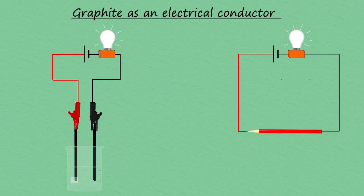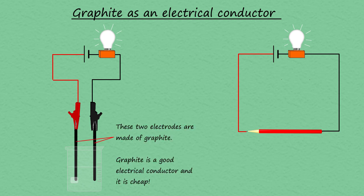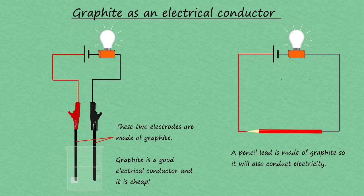The two diagrams on screen show two examples of graphite conducting electricity. Electrodes used to pass an electrical current through solutions are made of graphite. You can also show that graphite in a pencil lead will conduct electricity by simply connecting it in a circuit with a cell and a bulb.